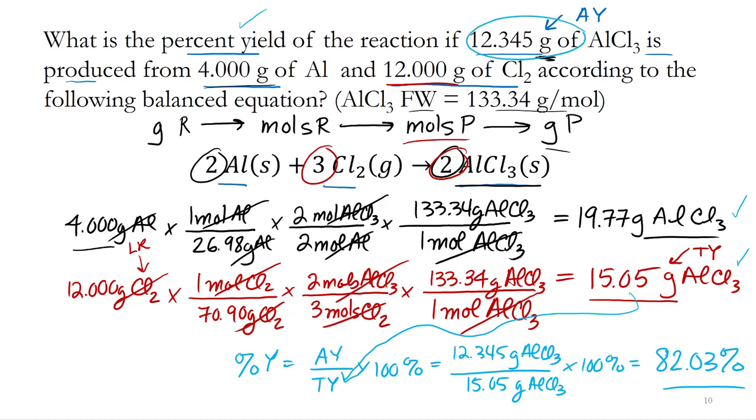I did a couple of mass-to-mass conversions to figure out which one was my theoretical yield, then plugged that into my percent yield calculation. The actual yield has to be measured, so we looked up that information in the problem and calculated the percent yield.